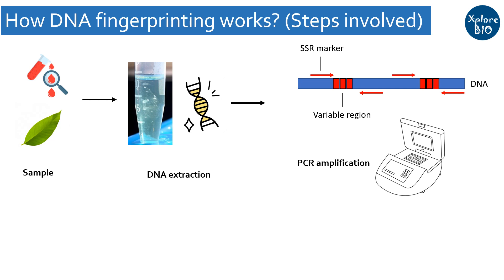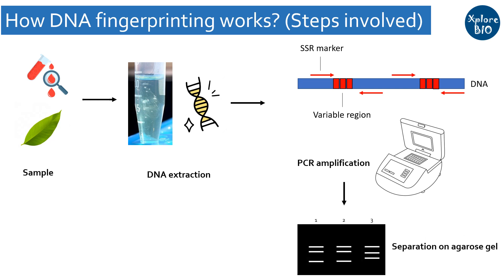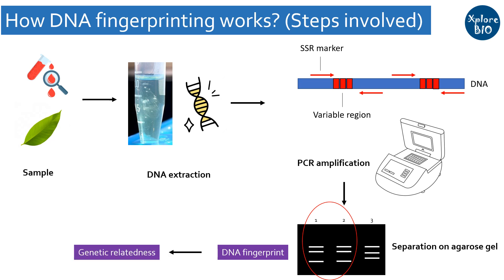The PCR-amplified DNA fragments are separated on an agarose gel based on their size. These fragments, also known as the DNA Fingerprint profiles, are visualized under UV. Individuals or samples having the same or similar profiles are expected to be the same, genetically similar, or have some kind of relationship.